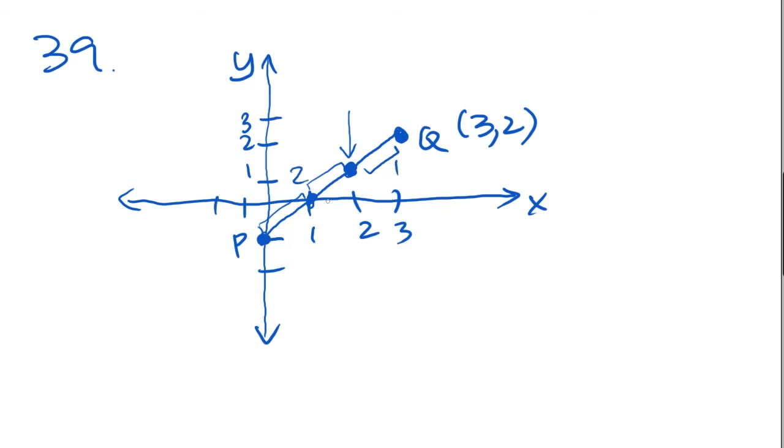So that would be x would be 2 here, and the y would be 1. So the answer is 2, 1, and that is answer choice B.